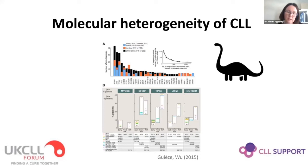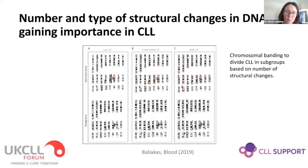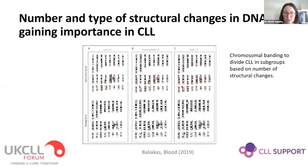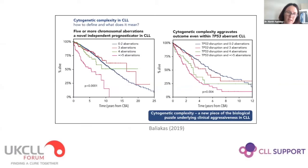Taking a broader view of the CLL genome globally, a paper from three years ago used chromosomal banding to look at the number and type of structural changes at the DNA level. This is an emerging biomarker of complex karyotype. Patients with a high complex karyotype — five or more abnormalities — formed a group whose CLL did badly on treatment.